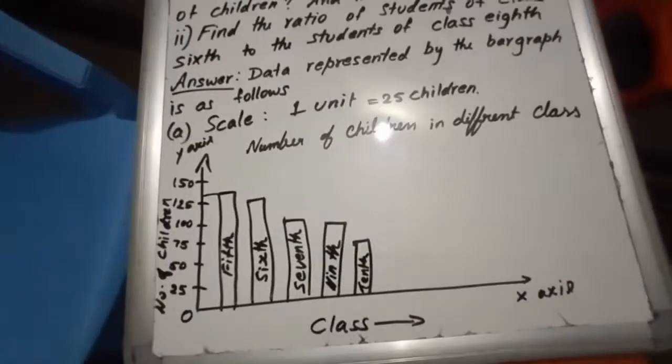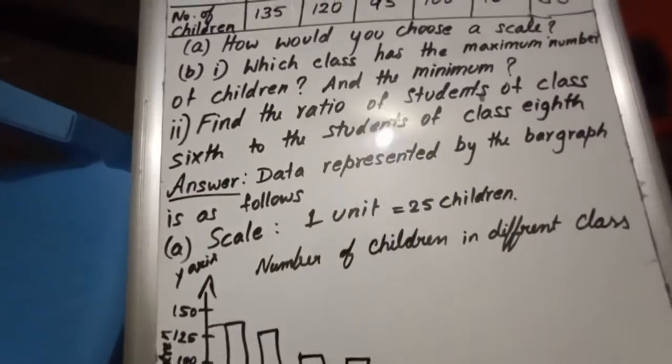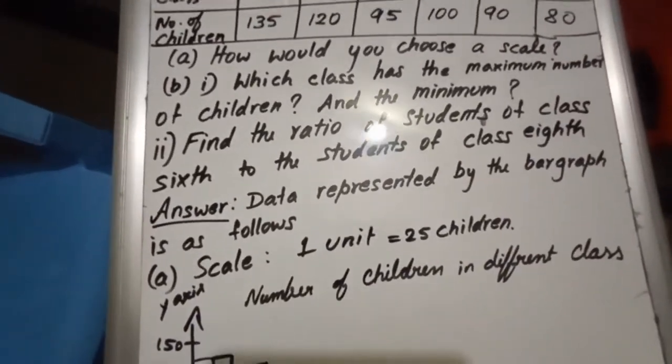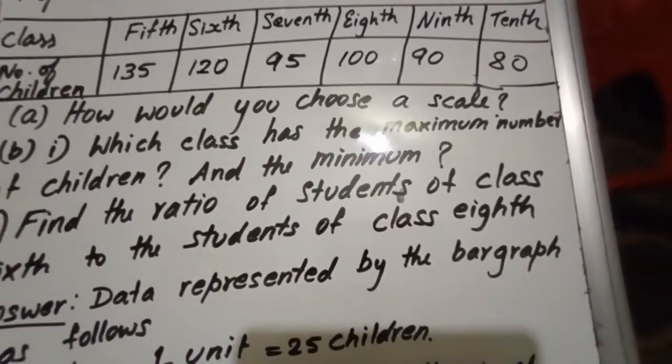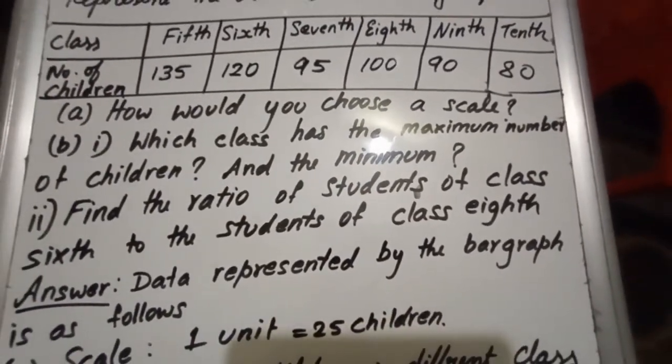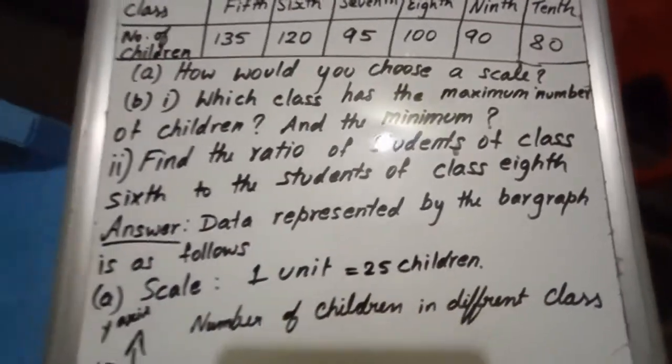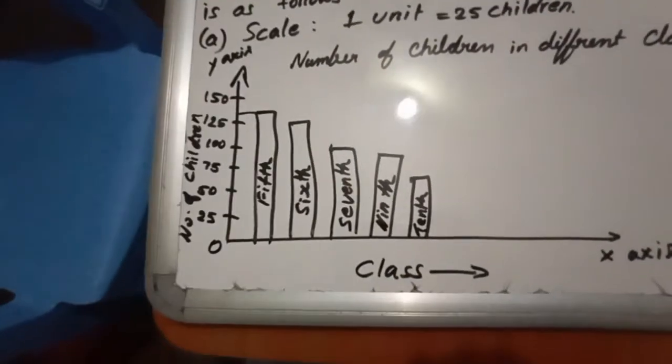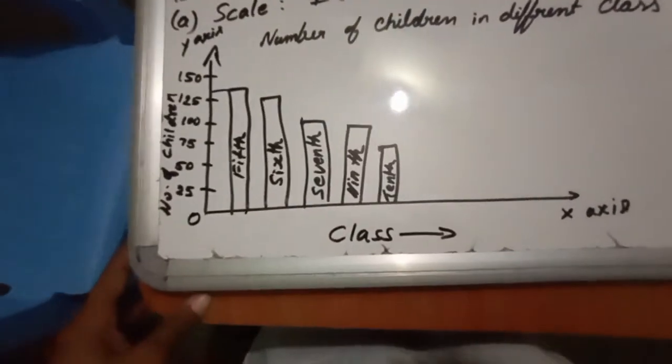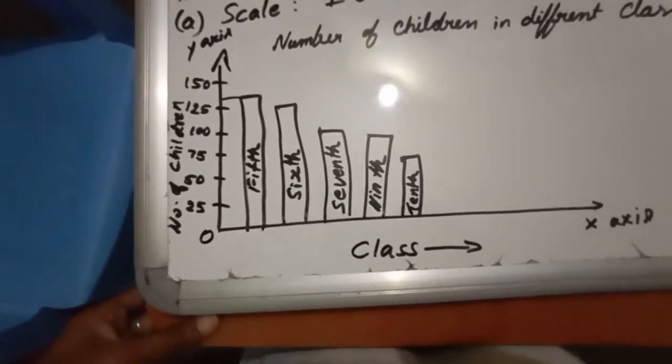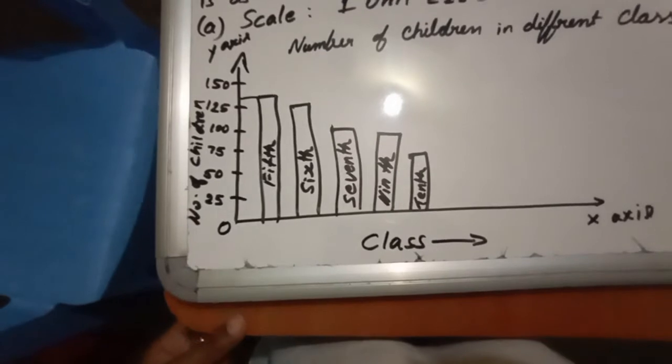Now let us answer the questions. In the A question we have answered. Now B question, in that sub question: which class has the maximum number of children and the minimum? You can see from the bar graph. Bar graphs are useful as I told you, even for uneducated people, as well as very easily you can grasp the information.